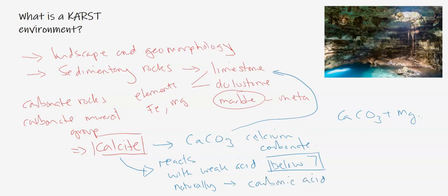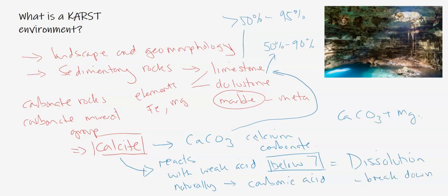There will be a separate video on carbonic acid formation, both in the atmosphere and in conjunction with soils and how it interacts with the bedrock. Dolostone can contain anywhere from 50 to 90 percent calcite, and limestone has to be over 50 percent to be called limestone, but can be as much as 95 percent calcite. When these rocks come in contact with carbonic acid, which forms naturally, you get what's called dissolution — the rock will eventually turn completely 100 percent into a solution, which is liquid.